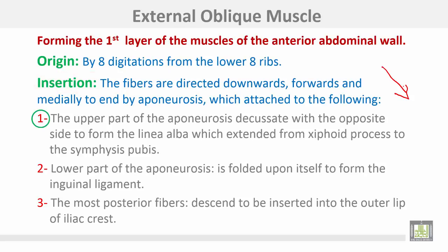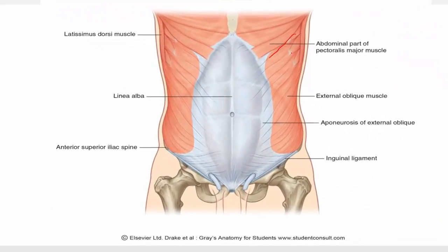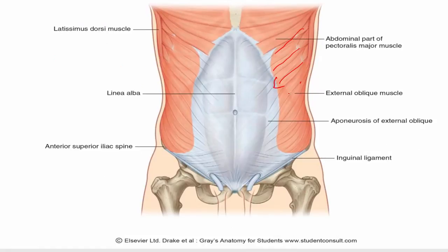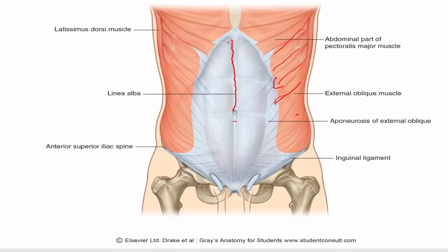The upper part of the aponeurosis decussates with the opposite side to form the linea alba, which extends from the xiphoid process to the symphysis pubis. The lower part of the aponeurosis is folded upon itself to form the inguinal ligament. The most posterior fibers descend to be inserted into the outer lip of the iliac crest. The fibers run downwards, forwards, and medially, ending by an aponeurosis that decussates with the opposite side to form the linea alba in the midline.